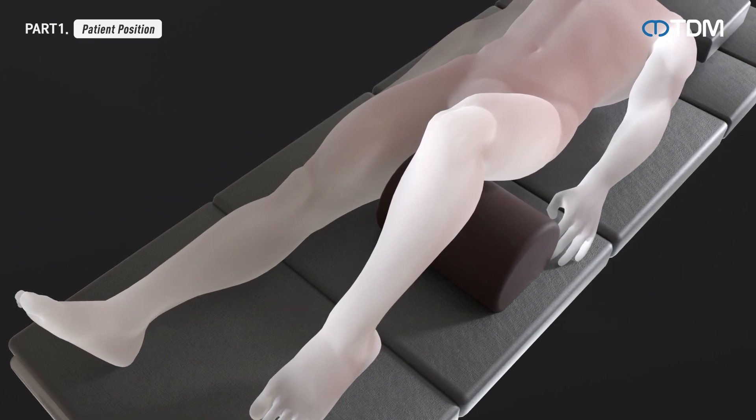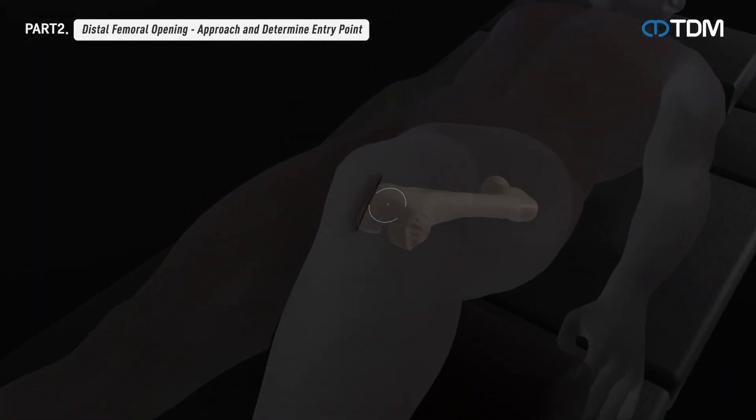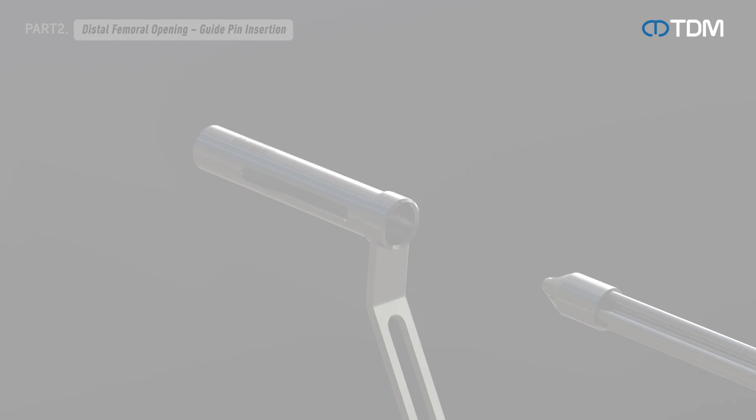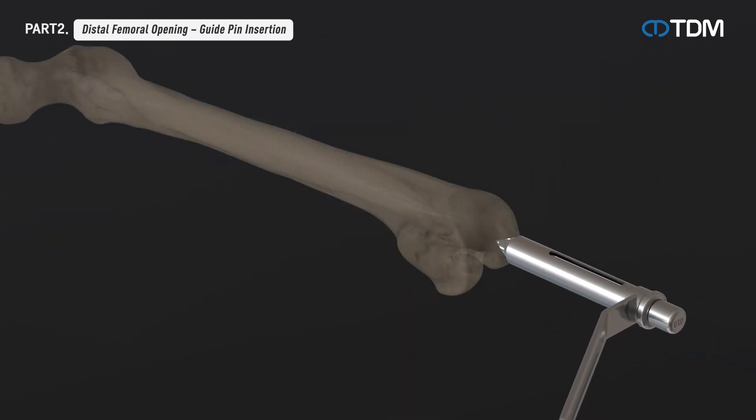Make an incision on the treatment area and place the guide pin in the center of the distal femoral cavity. Insert the instrument with the combination of protection sleeve, drill sleeve, and trocar into the incision to position the guide pin to be inserted.